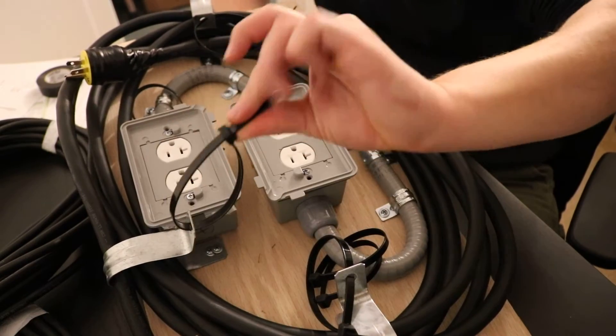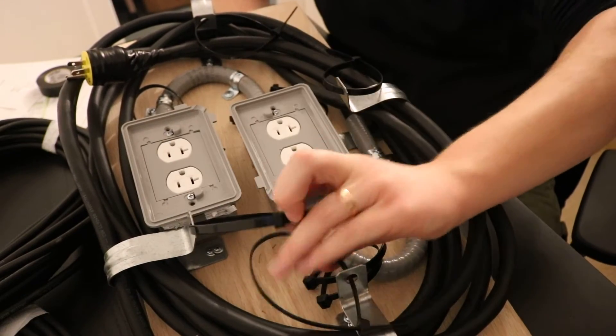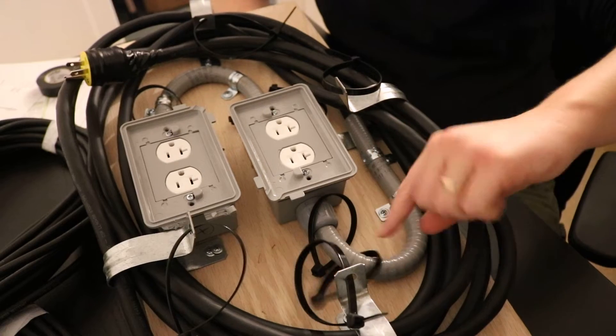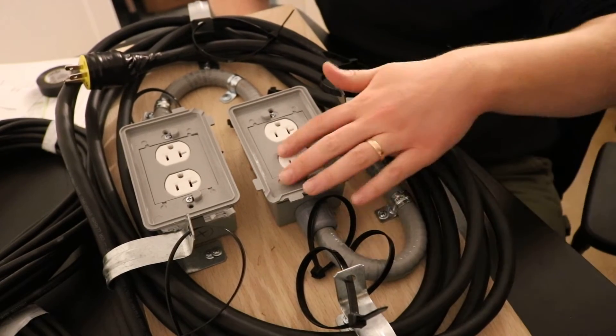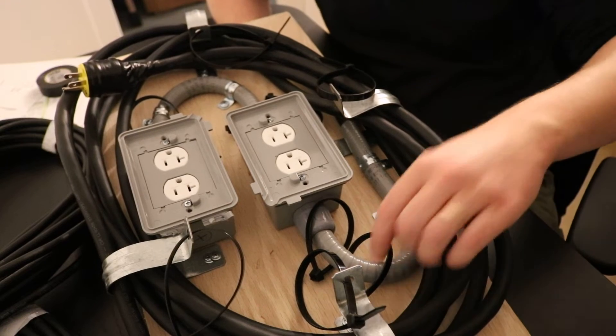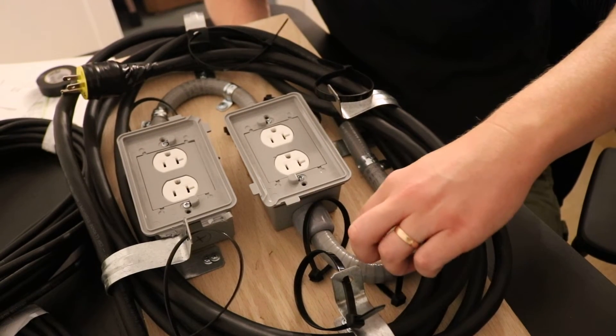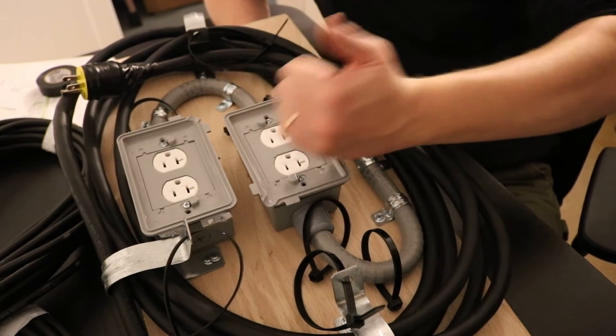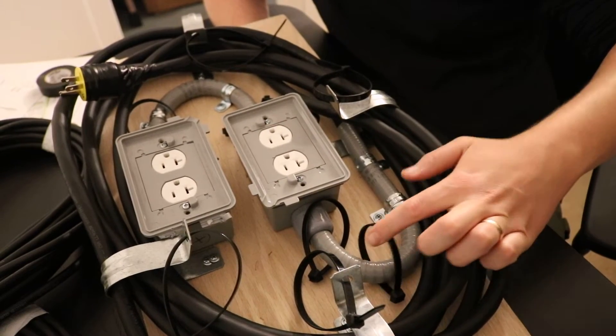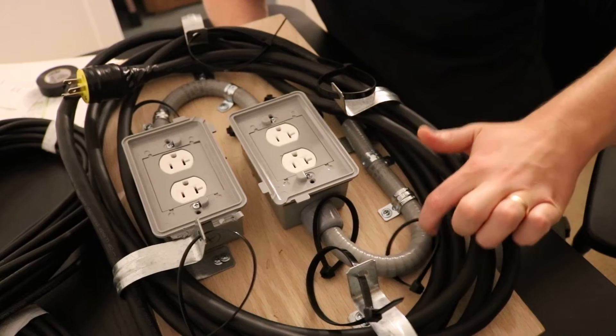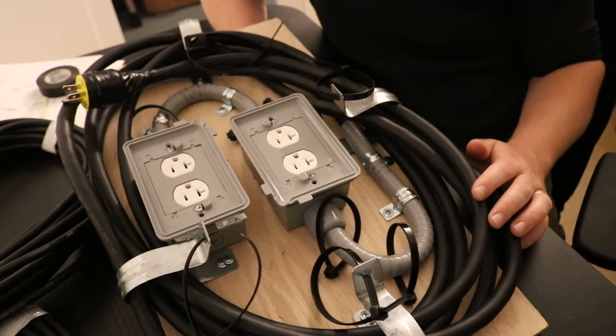I wrapped some zip ties around these straps and around the Carflex here for cords that are going a long distance. We can kind of use this so if they get pulled, instead of being pulled out of the outlet, maybe the zip tie can take some of that pull instead.